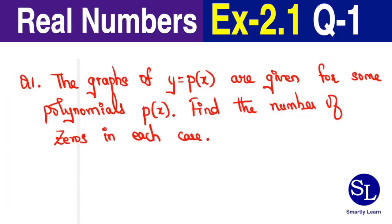It says the graphs of y equals p of x are given for some polynomials p of x. Find the number of zeros in each case. They are asking for the count of zeros in each of these cases. Now let's take the first numerical.